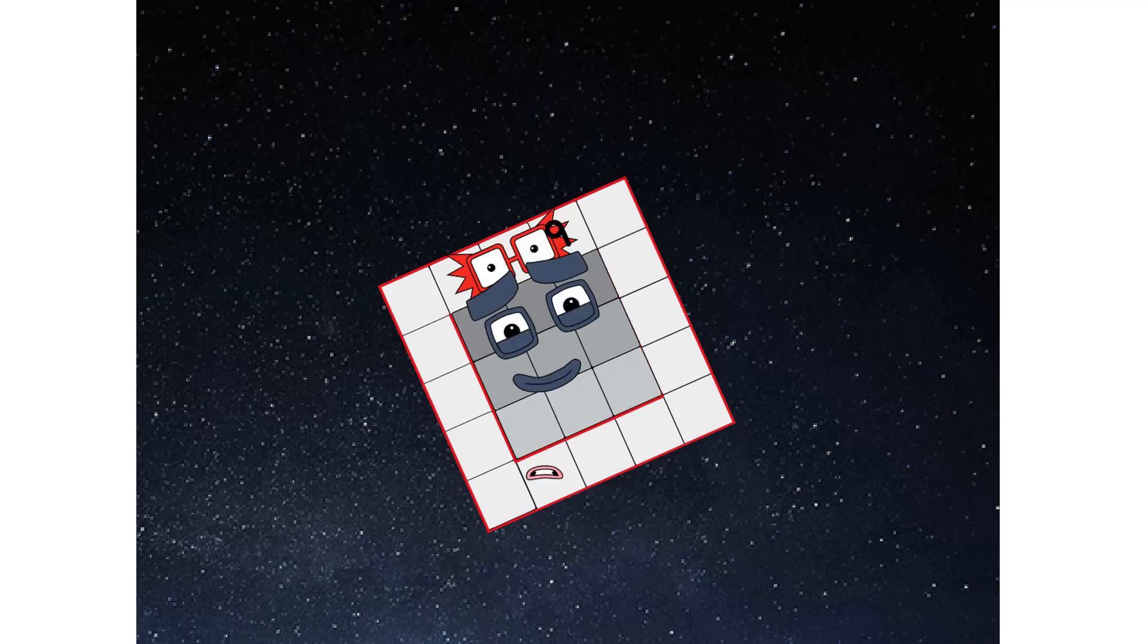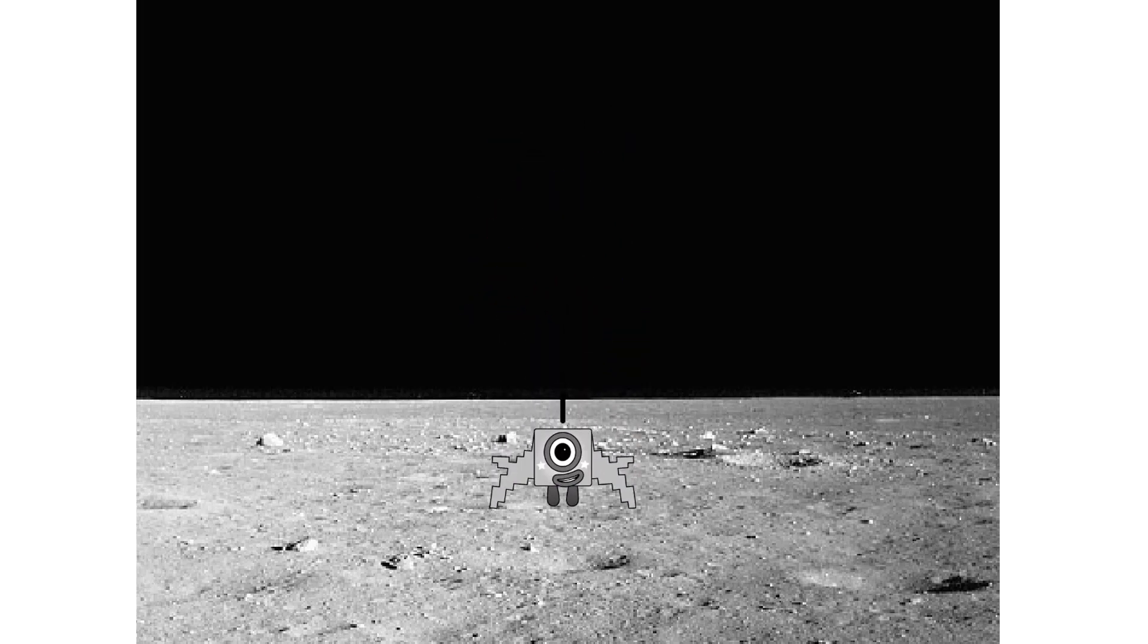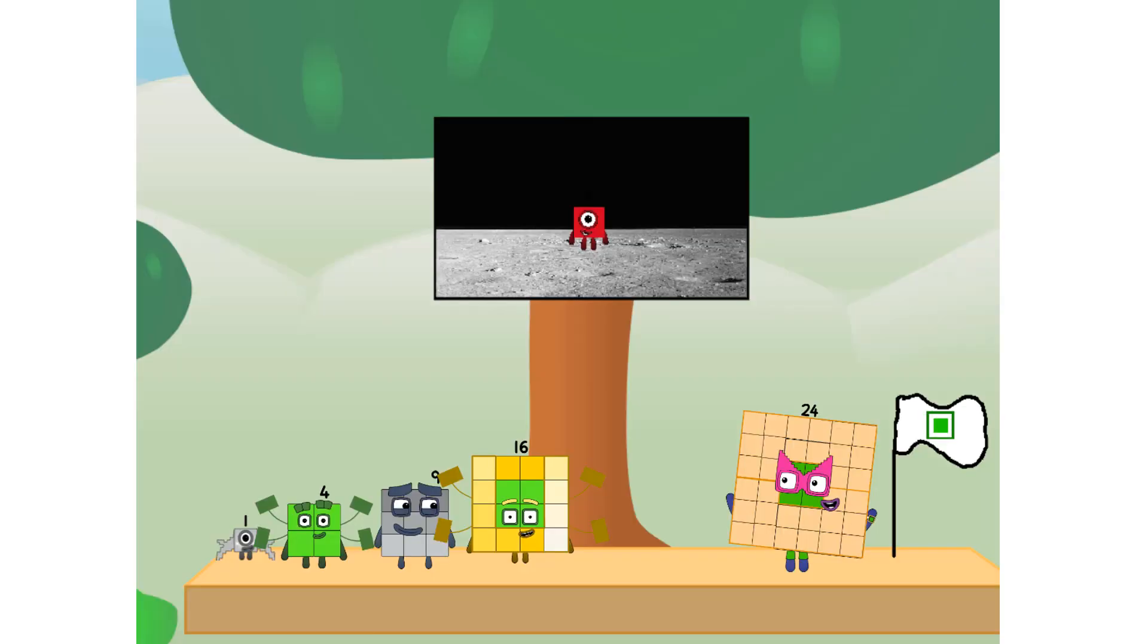Achoo! Entering lunar orbit. Launching lunar lander. Achoo! The square has landed. We did it. The only thing left now is to plant the square club flag.